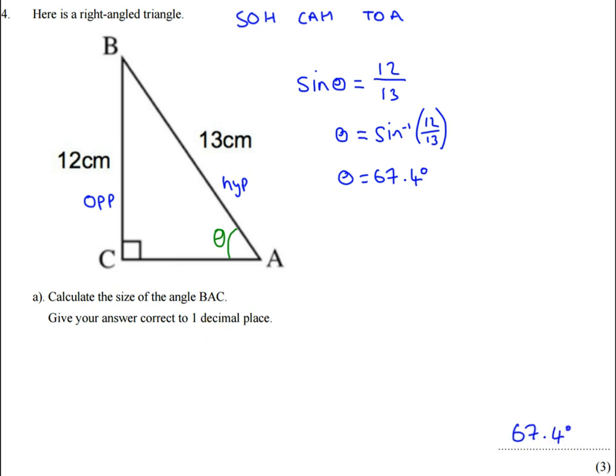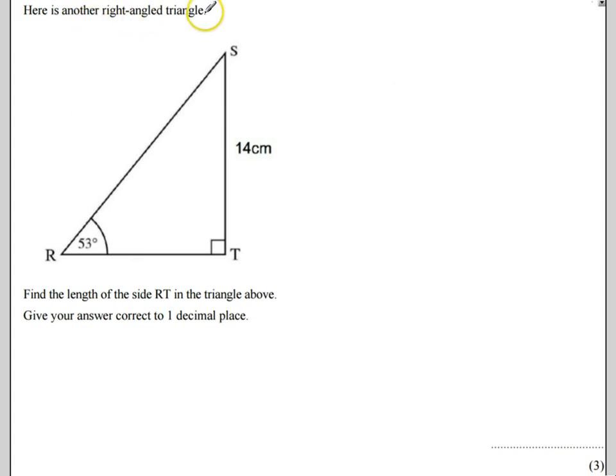For the second part of the question, we've got another right angle triangle. And we're going to find the side RT in this triangle. So RT is going to be this side here. So I'm just going to label that side with the letter X. And again, we're going to give our answer to one decimal place.